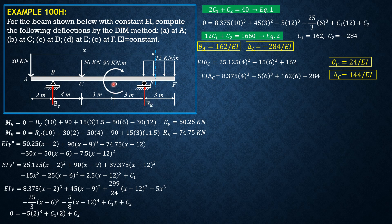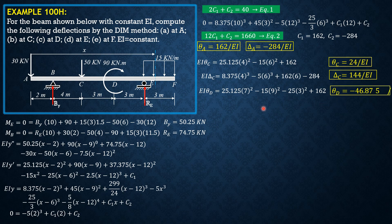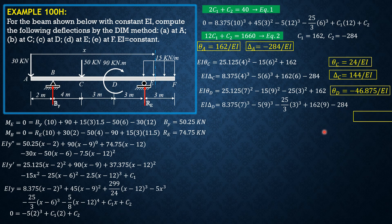Next, at D, X equals 9. EI theta D equals 25.125(7) squared minus 15(9) squared minus 25(3) squared plus C sub 1 which is 162. So theta D equals negative 46.875/EI. For delta D with X equals 9: EI delta D equals 8.375(7) cubed minus 5(9) cubed minus (25/3)(3) cubed plus 162 times 9 plus C sub 2 which is negative 284. So delta D equals 176.625/EI.